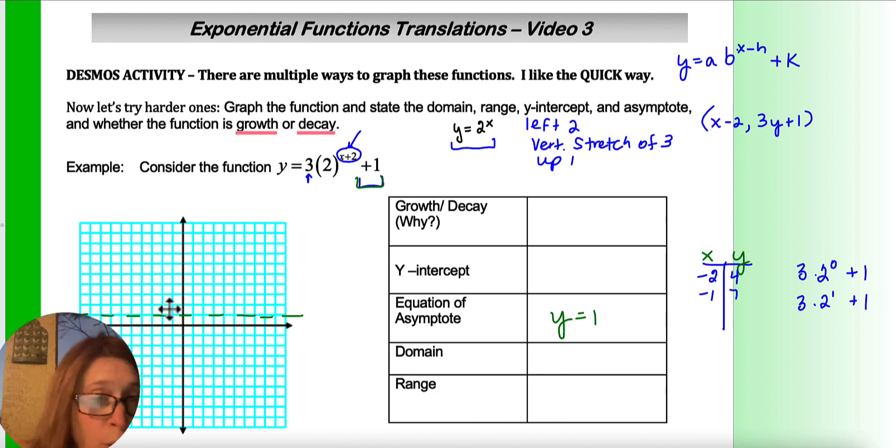So I can plot those points. Negative 2, 4: 1, 2, 3, 4. Negative 1, 7: 1, 2, 3, 4, 5, 6, 7. We do want our y-intercept, so we are going to let x be 0.